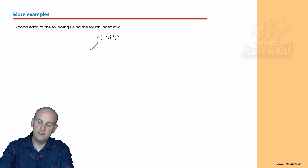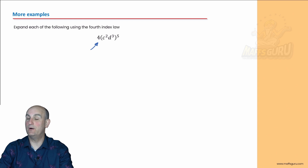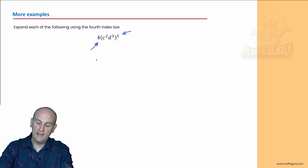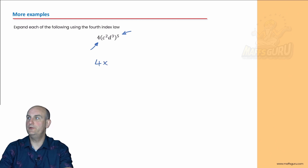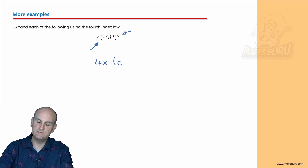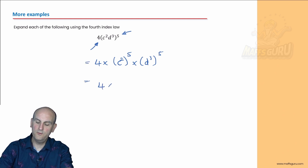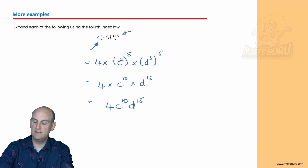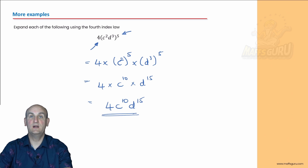Here's another trick they use in questions: is this 4 inside or outside of the bracket? It's outside the bracket. So the 4 has nothing to do with that inner power of 5 — nothing to do with it at all. The 4 just stays there. Now I'm going to write each term inside the brackets in its own set of brackets. There's my c squared, which I'm going to raise to the power of 5. There's my d cubed, which I'm going to raise to the power of 5. Power of a power: 2 times 5 is 10, so that becomes c to the power of 10. And 3 times 5 is 15, so d to the power of 15. So it becomes 4 c to the power of 10 d to the power of 15.